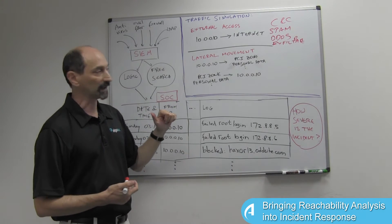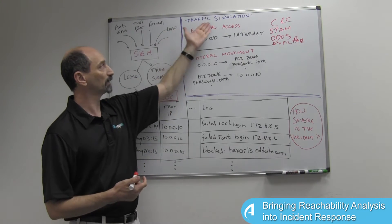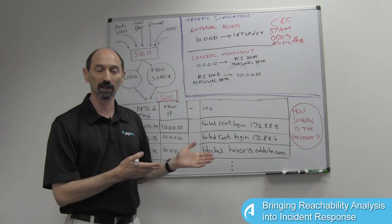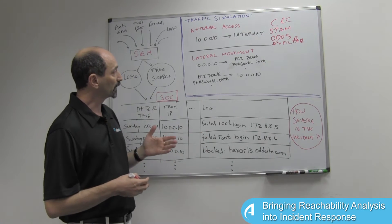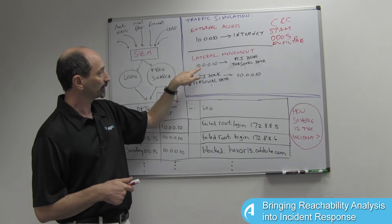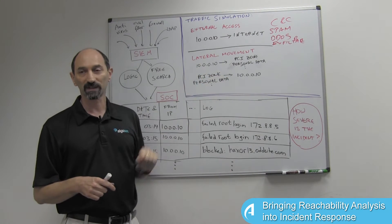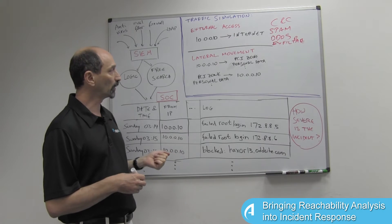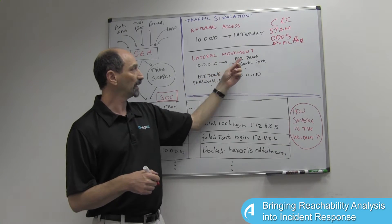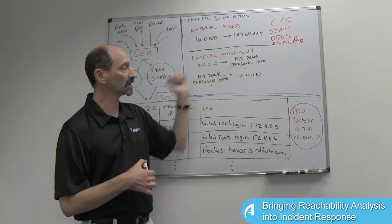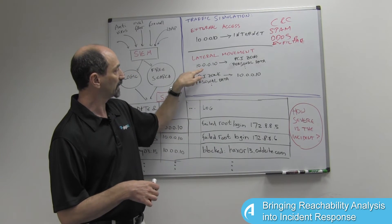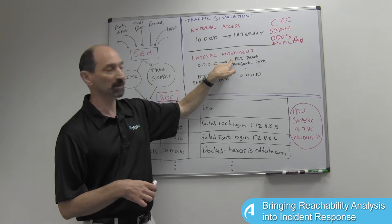What about internal access? We could use the same capability of traffic simulation to check what the internal filtering is allowing, to see what type of access the infected system has to other more sensitive areas of our internal network. For instance, if we have an area of servers and systems that store credit card data, a PCI zone, if the infected system has access to the PCI zone, then it can steal sensitive information.